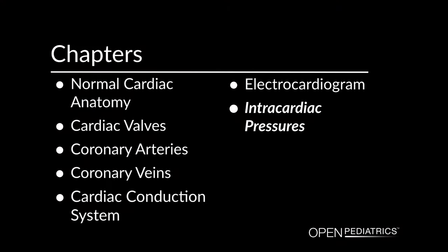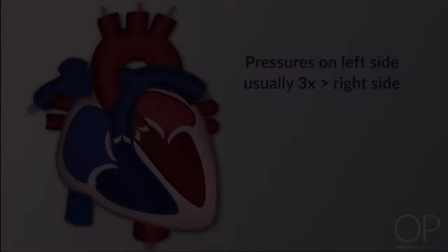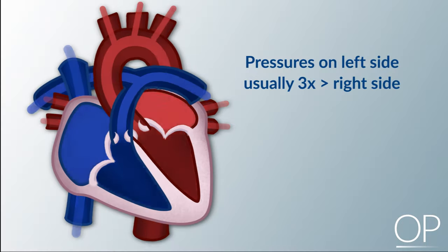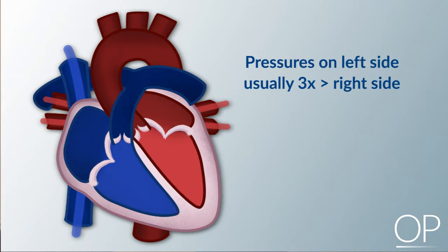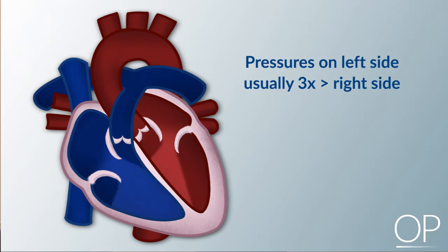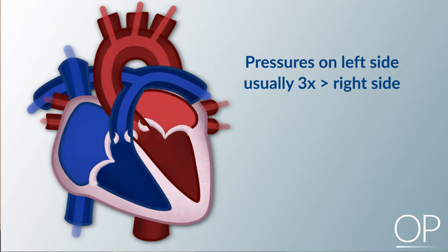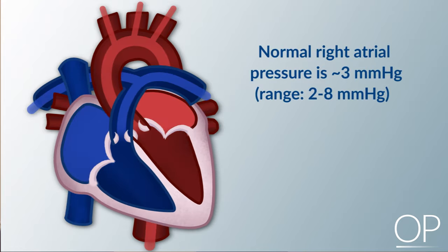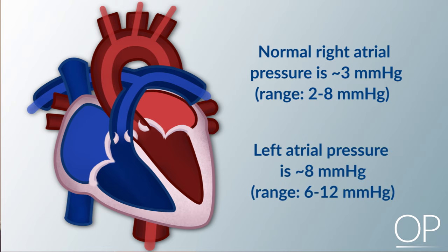Intracardiac pressures. Pressures on the left side of the heart are usually three times greater than the right side of the heart. A normal right atrial pressure is usually around three, with a range of two to eight. Left atrial pressure is usually eight, with a range of six to twelve millimeters of mercury.